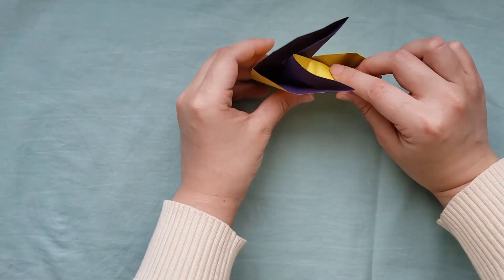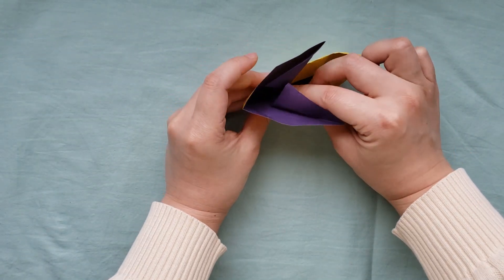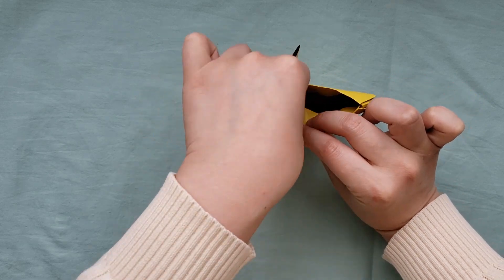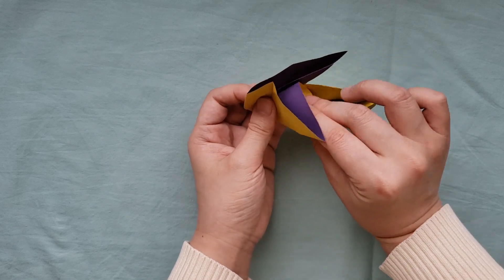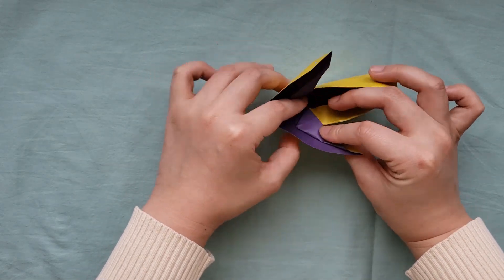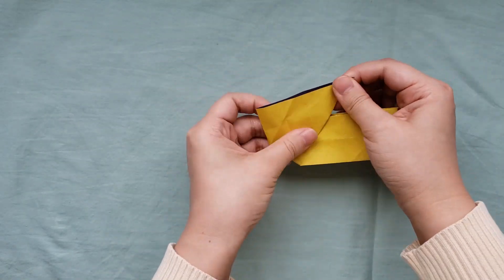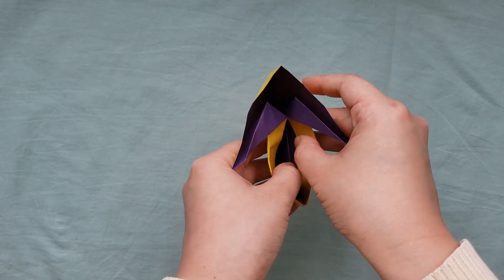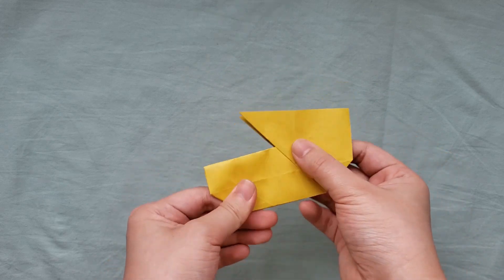Do the same on the other side. I didn't hold on to the head fold on this side and struggled a bit to find the triangle. But it all worked out in the end. Congratulations! You are done all the difficult parts. Now all we need to do is finish with the details of the face.